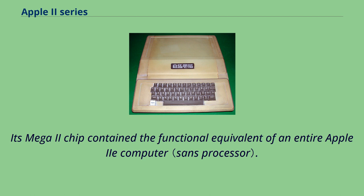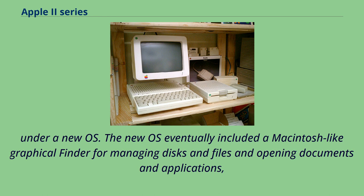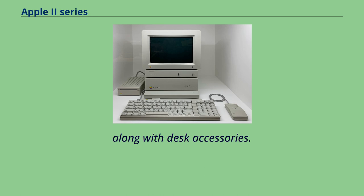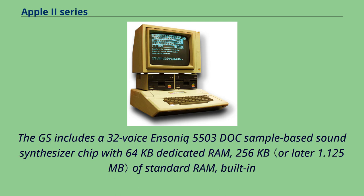Combined with the 65816's ability to execute 65C02 code directly, the IIgs provided full support for legacy software while also supporting 16-bit software under a new OS that included a Macintosh-like graphical finder. Eventually, the IIgs gained the ability to read and write Macintosh discs and, through third-party software, even multitasking and TrueType font support. The IIgs includes a 32-voice Ensoniq 5503 DOC sample-based sound synthesizer chip with 64KB dedicated RAM, 256KB of standard RAM, built-in peripheral ports, and built-in AppleTalk networking.